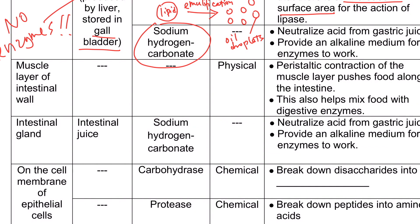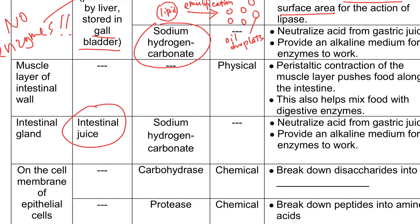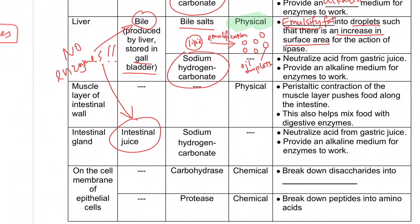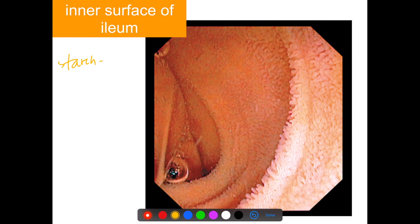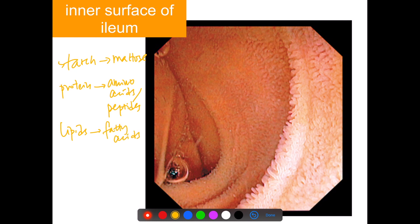Throughout the small intestine, there are intestinal glands which secrete intestinal juice. This digestive juice, like bile, has no enzymes. It contains mainly sodium hydrogen carbonate to neutralize the acidity from gastric juice and provide an alkaline medium for the enzymes to work. At this stage, starch has been broken down into maltose, protein is broken down into amino acids or peptides, and lipids — with the help of pancreatic juice and bile — are broken down into fatty acids and glycerol.